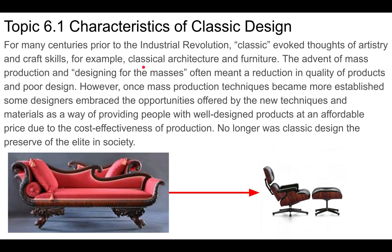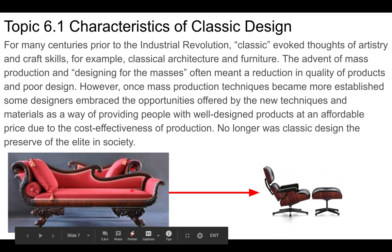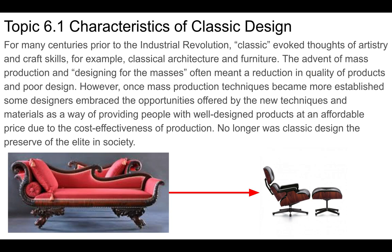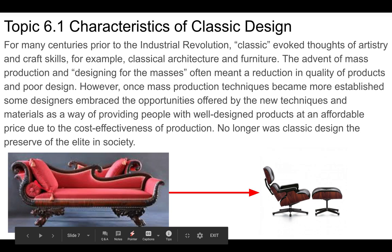Classic design referred for many years to classical architecture and furniture — things that would fit in a Roman emperor's home, like an ornate lounge. These were individually crafted, very expensive, and most people couldn't afford them. With industrialization and mass production came cheaper alternatives. At first those alternatives weren't high quality, but as manufacturing techniques and materials improved, well-designed and cost-effective products emerged.